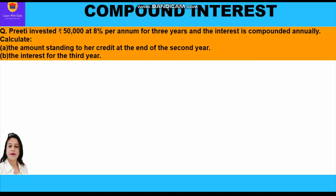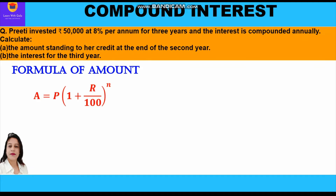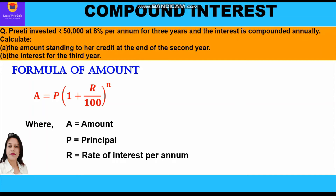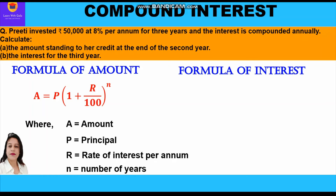Since in this question we need to find the amount and the interest, let us revise the formulas. The formula for amount is: A = P(1 + r/100)^n, where A is the amount, P is the principal, r is the rate of interest per annum, and n is the number of years.